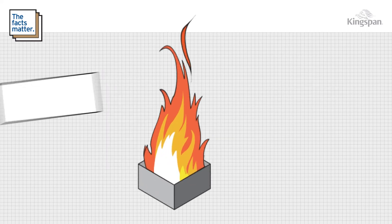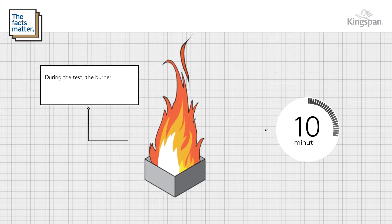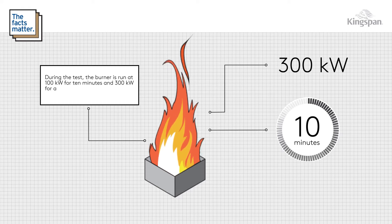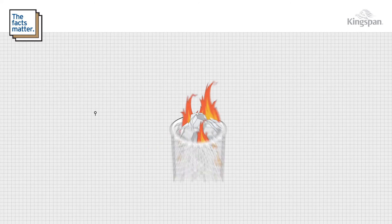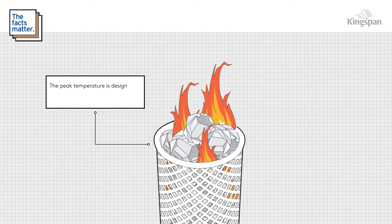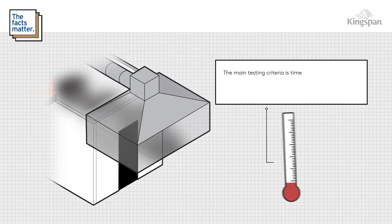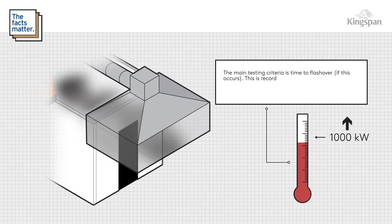A large exhaust hood is mounted outside the room above the doorway to capture smoke and gases exiting the room during the test. The burner is run at 100 kilowatts for 10 minutes and 300 kilowatts for a further 10 minutes, or until the room reaches flashover. The peak temperature is designed to approximate the heat output from a fire in a large waste paper bin.